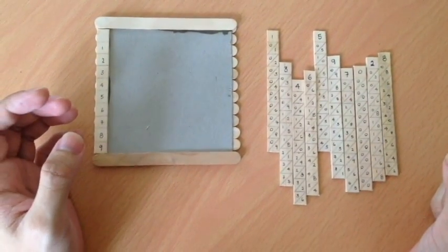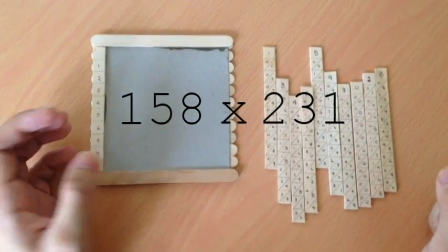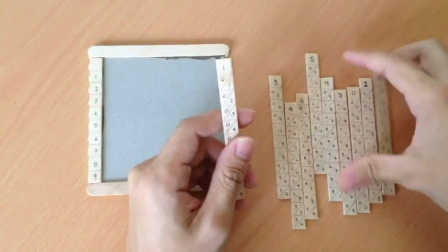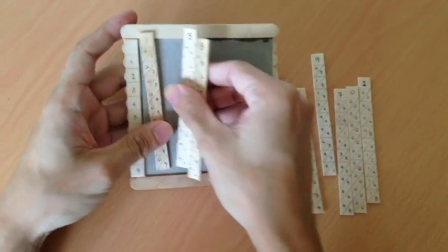To use this to calculate how much I need to pay for the watermelons, which is 158 times 231, I'll need to select the 1, 5, and 8 rods and place it onto the baseboard.